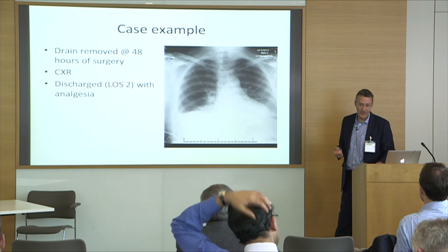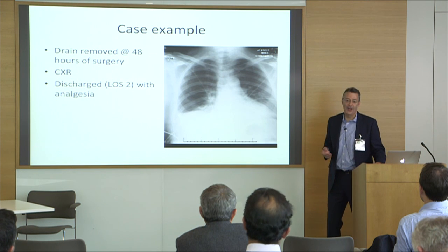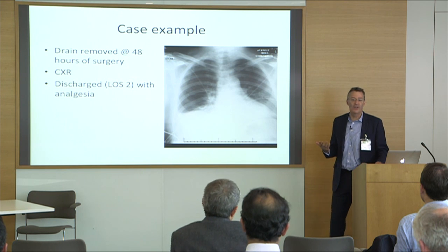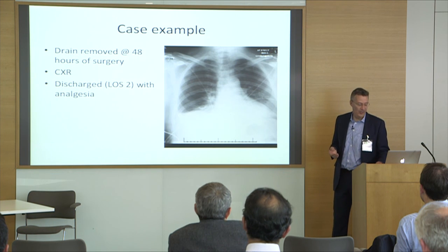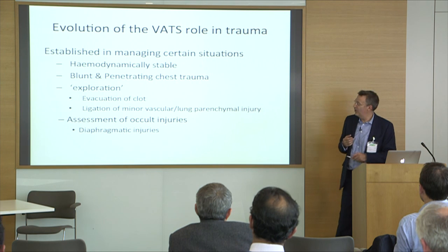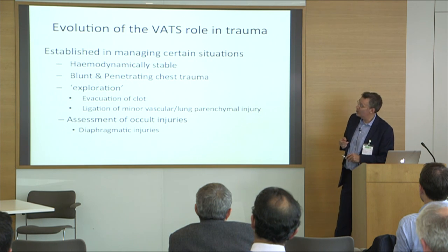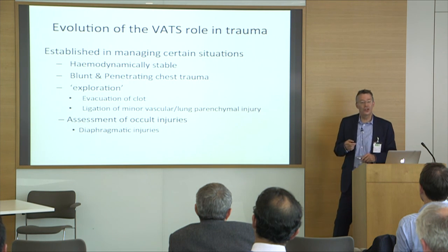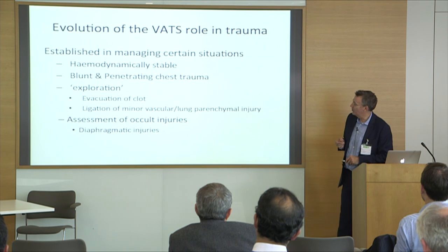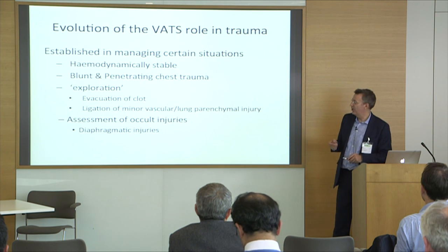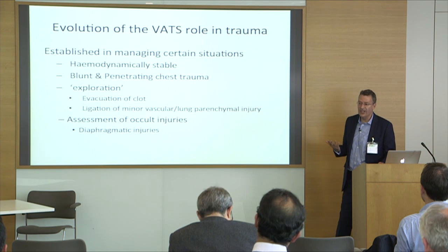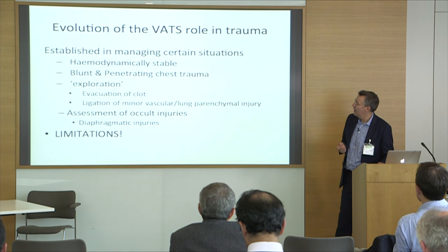This is not clever stuff. It's a very real-life kind of patient you see every day — haemodynamically stable, predominantly blunt trauma, occasionally penetrating. You're offering exploration to clear clot, deal with minor vascular injuries such as intercostal or occult mammary injuries, occasionally lung parenchymal injuries requiring surgical exploration, and also to pick up occult injuries early, particularly diaphragmatic injuries. That's fairly established practice, but it also has limitations.